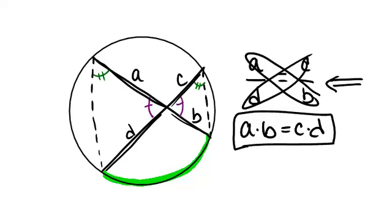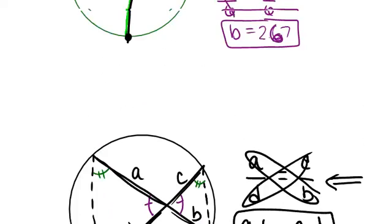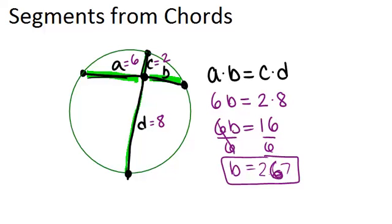So what you should remember is this result that we talked about up here is a result of similar triangles. And the triangles are created if you just add in these segments right here, and you could easily show they are similar by angle-angle.